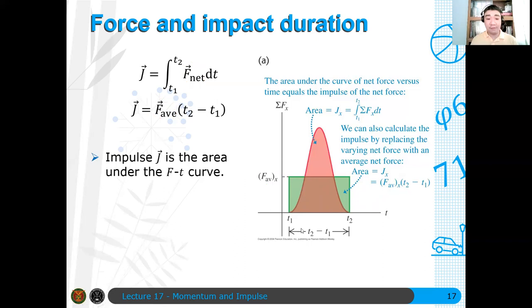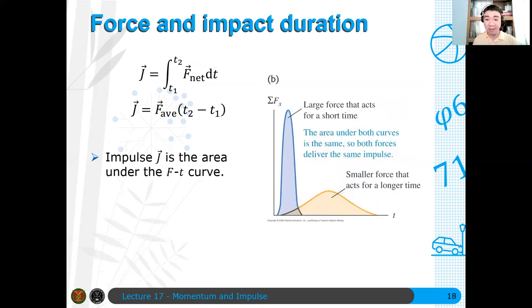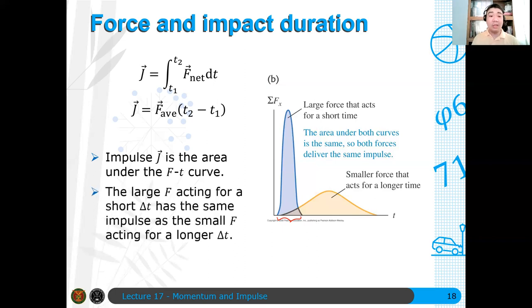But for now, ang sabihin na lang natin muna, the area of this red curve here is equal to the area of this green shaded region here. Para asang area yan. Because you're talking of this average force over the same time interval as this force function here. Again, let me just emphasize that the force here is a function of time. It is not a function of position. Function of time yan. So the impulse is the area under the F-T curve. And sometimes there are cases that there's a large force acting on a very short period of time, and there's a small force but acting at a longer period of time. And if you calculate the area under the curve of these two regions here, you will see that they have the same area and therefore they still have the same impulse.